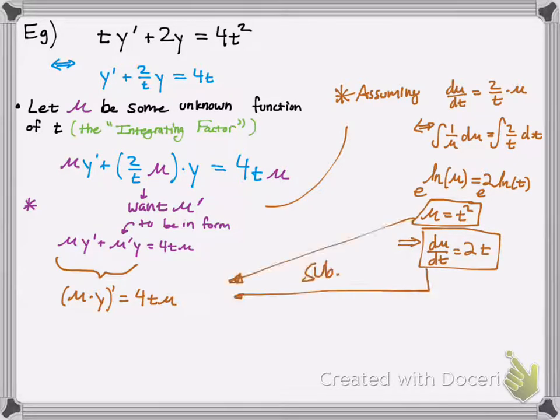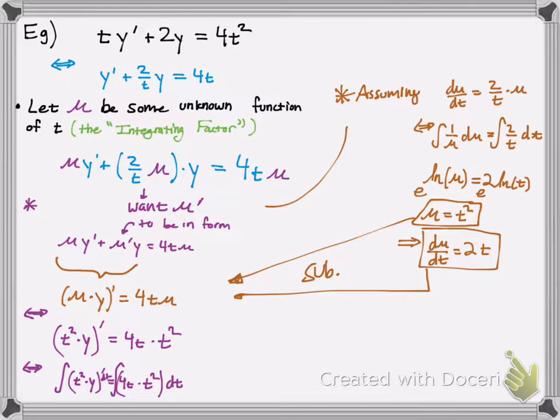And then what we do is we back substitute into this equation right here, and we can get that to be, we can write the equation as equivalent to t squared times y, all that prime, equals to 4t times t squared, integrate both sides. Now that we can, and it's much easier, and that's the whole point of the method, is to get it into this form so you can integrate easily.